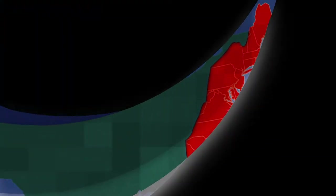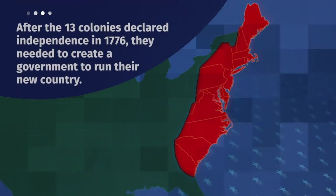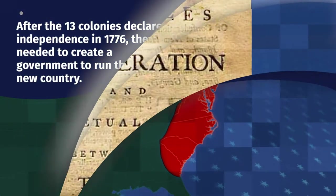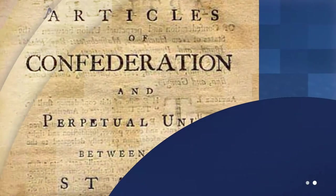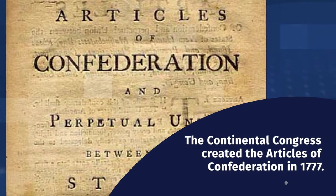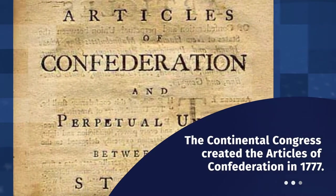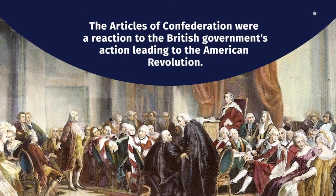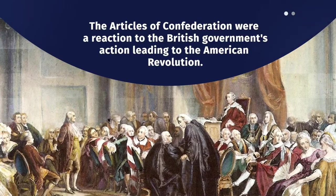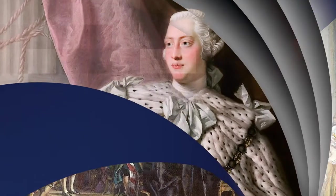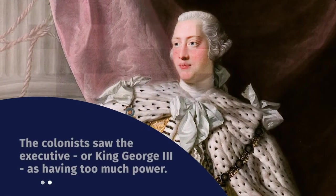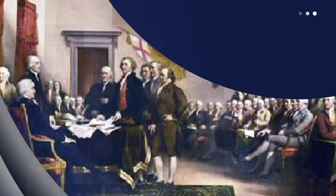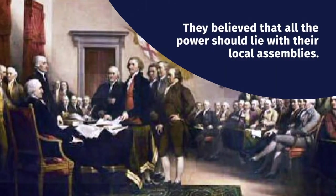After the 13 colonies declared independence in 1776, they needed to create a government to run their new country. The Continental Congress created the Articles of Confederation in 1777. The Articles were a reaction to the British government's actions leading to the American Revolution. The colonists saw the executive, or King George III, as having too much power and believed that power should lie with their local assemblies.